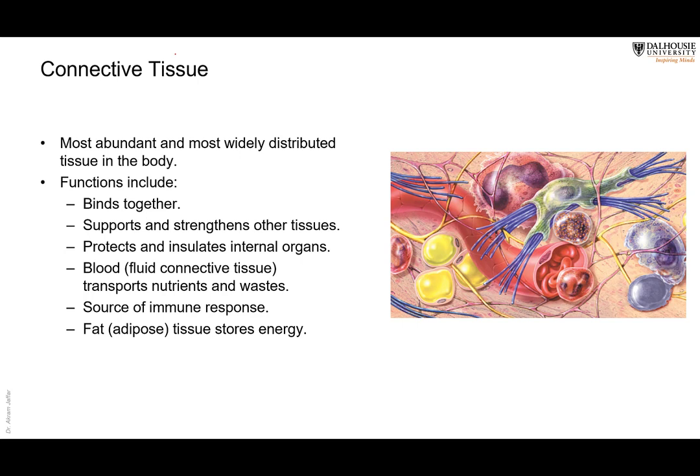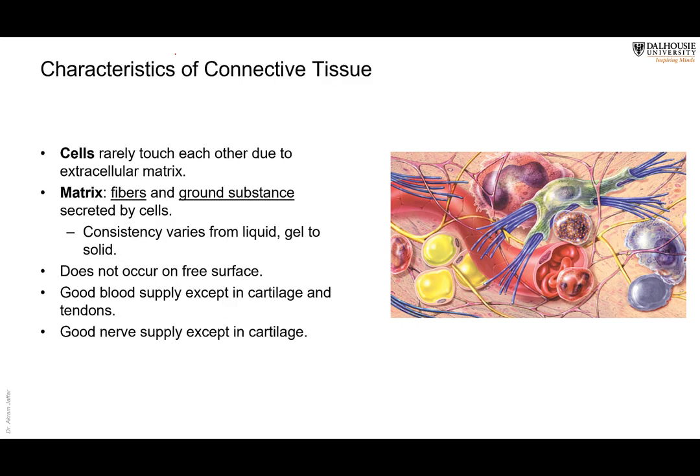Connective tissue also produces heat, as we will see in a moment. How does connective tissue differ from epithelial tissue? The connective tissue has cells, and these cells do not form layers — they are not tightly packed. They are separated from each other, and the thing that separates them is called the matrix.